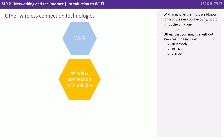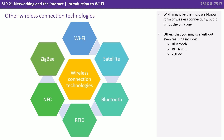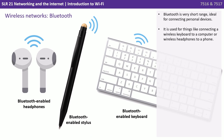Wi-Fi might be the most well-known form of wireless connectivity, but it's not the only one. Others you may use without even realising include Bluetooth, RFID, NFC, and Zigbee. Bluetooth is very short range and ideal for connecting personal devices. It's used for things like connecting a wireless keyboard to a computer or wireless headphones to a phone.